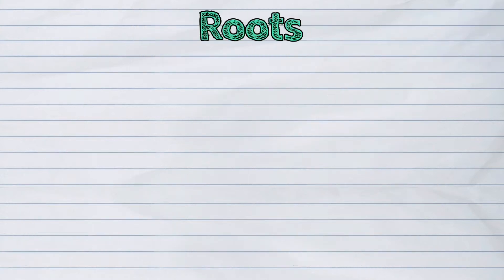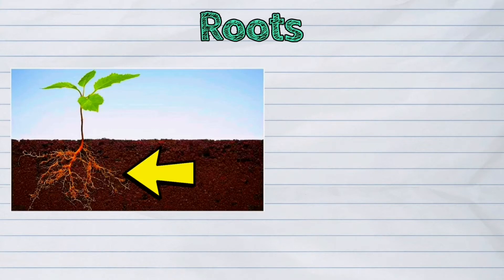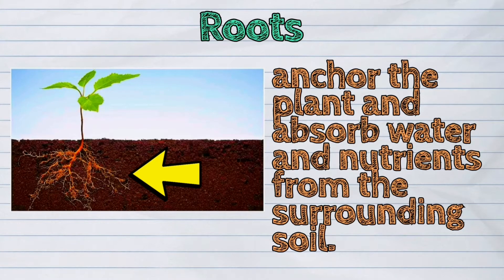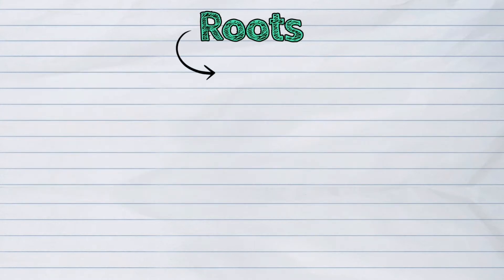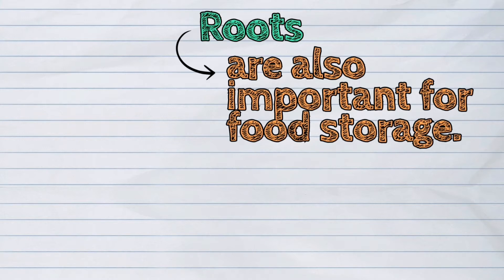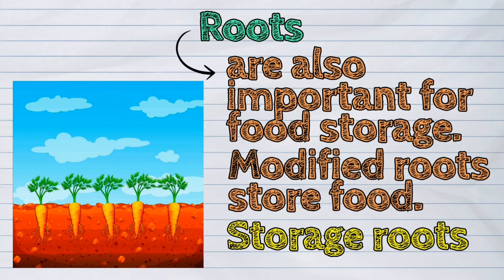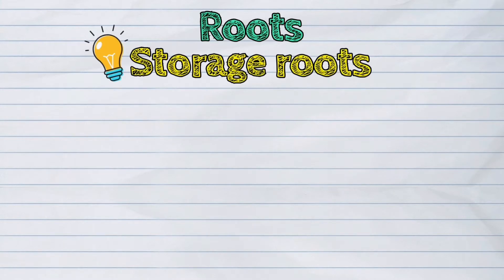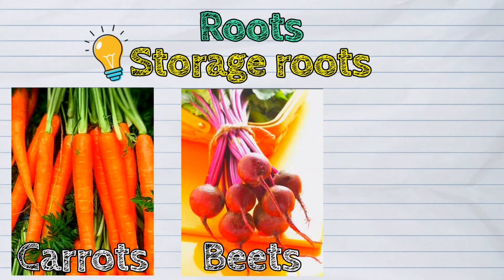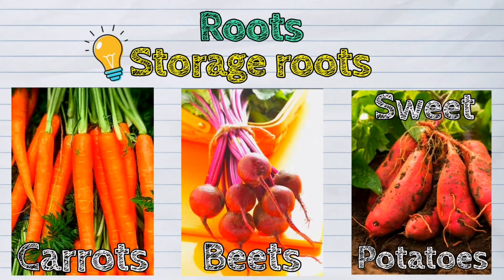The roots, for example, anchor the plant and absorb water and nutrients from the surrounding soil. Roots are also important for food storage. Modified roots that store food are called storage roots. Examples are carrots, beets, and sweet potatoes.